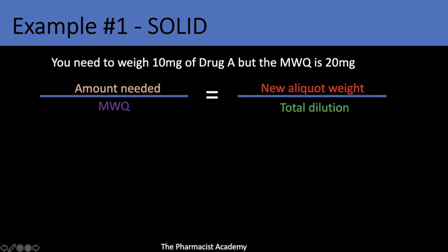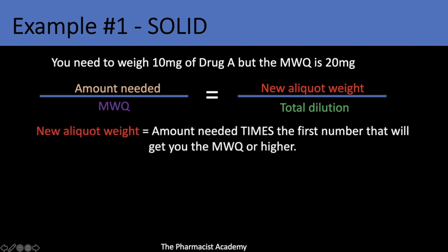On the right side, all you're trying to do is create a dilution — a larger weight or larger volume — so that you can weigh a new aliquot weight that will contain your amount needed. The new aliquot weight is the amount needed (10 milligrams) times the first multiplier that will get you to the MWQ or higher.